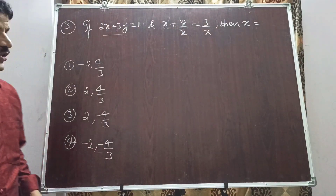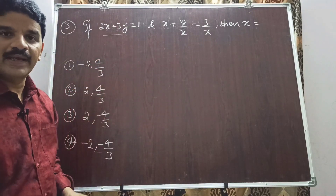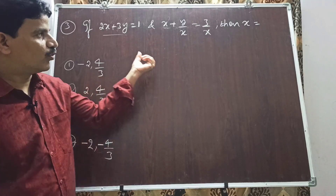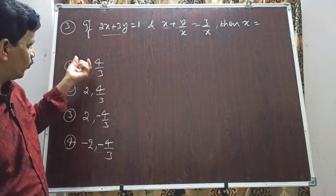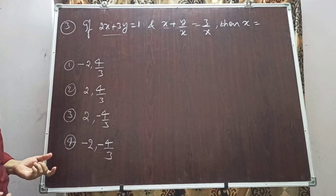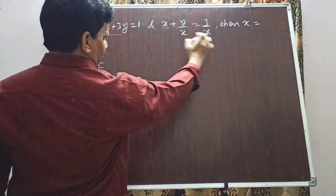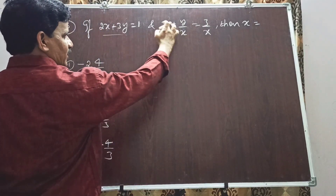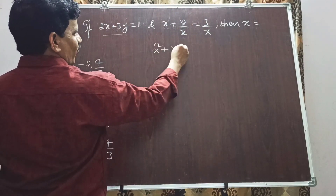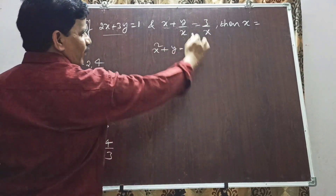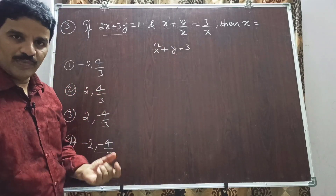Question 3: If 2x + 3y = 1 and x + y/x = 3/x, then x equals how much? We have two equations and x is a quadratic, so x has two values. First, simplify the second equation by taking LCM (which is x): x² + y = 3. This is an equation in two variables, but we need a single-variable quadratic.